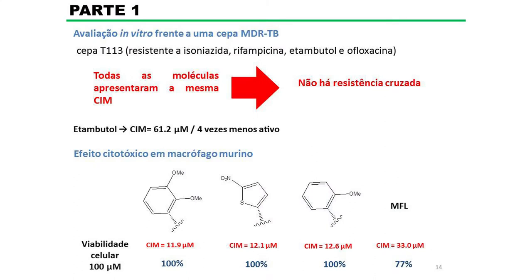Por fim, a gente verificou a citotoxicidade dessas moléculas. Aqui estão as três mais ativas obtidas: numa concentração de 100 micromolar, bem maior do que a concentração inibitória mínima da molécula, ela não foi capaz de matar a célula. No caso, a célula era o macrófago murino, que é a célula hospedeira do Mycobacterium tuberculosis no organismo humano.